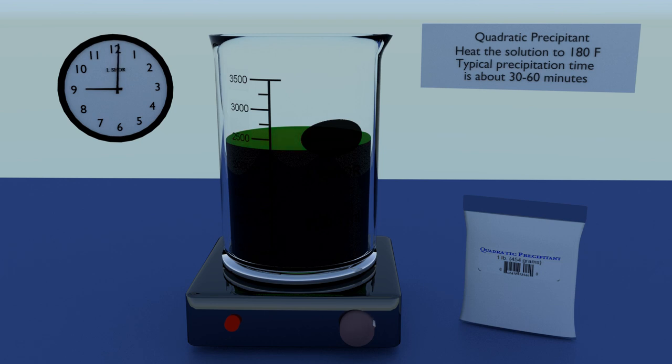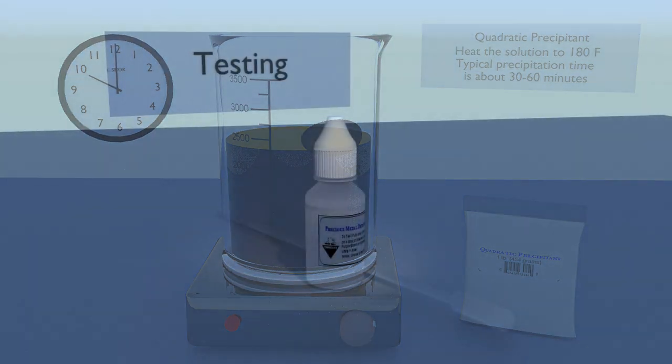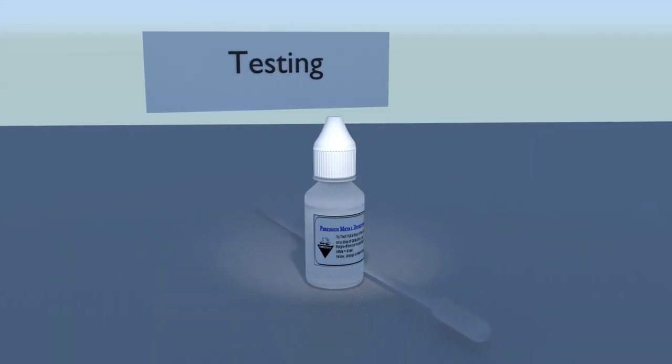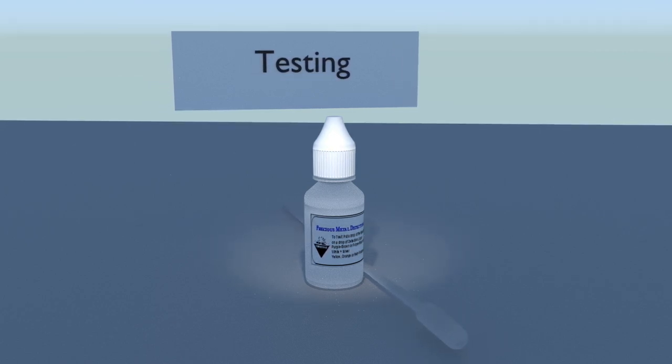Add 1 ounce of quadratic for every ounce of metal that you dissolved. So, for example, if you dissolved 5 ounces of metal, then add 5 ounces of quadratic. Heat the solution to 180 degrees Fahrenheit. Typically, the gold will complete its precipitation in about 30 to 60 minutes.